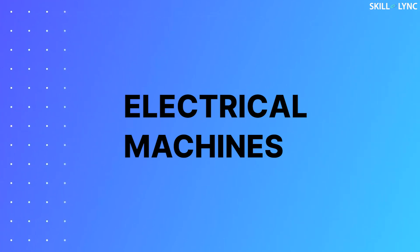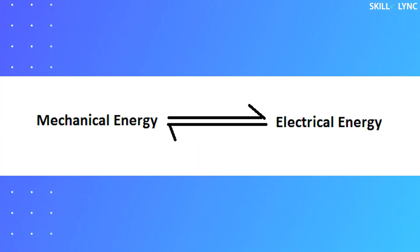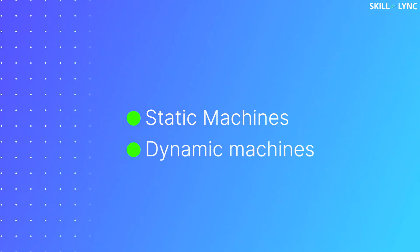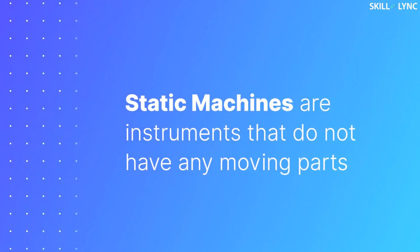These processes are carried out with the help of electrical machines, which is a general term for devices that convert mechanical energy to electrical energy or electrical energy to mechanical energy. These electrical machines are broadly classified into two types: static machines and dynamic machines. Static machines are instruments that do not have any moving parts.